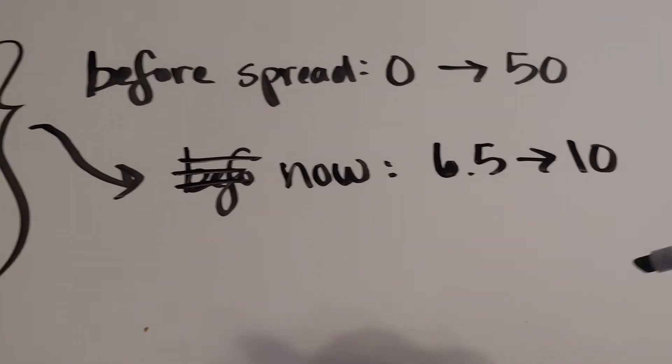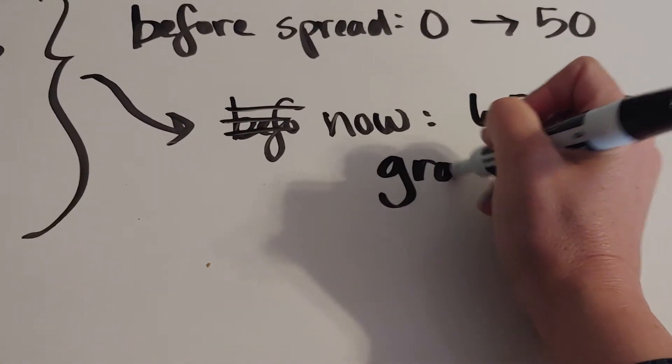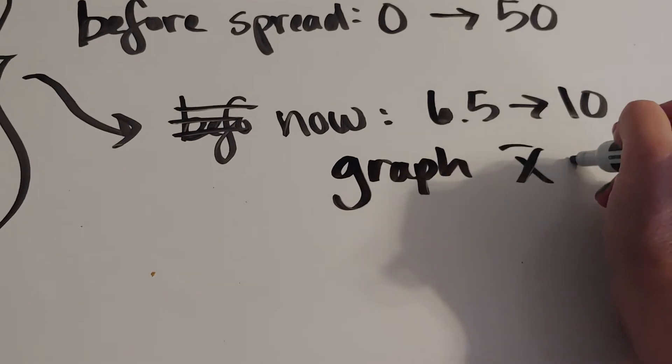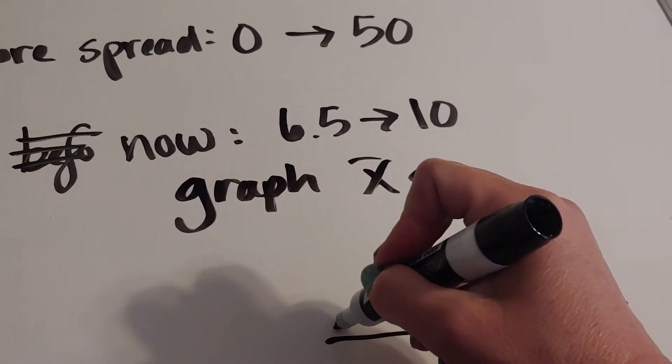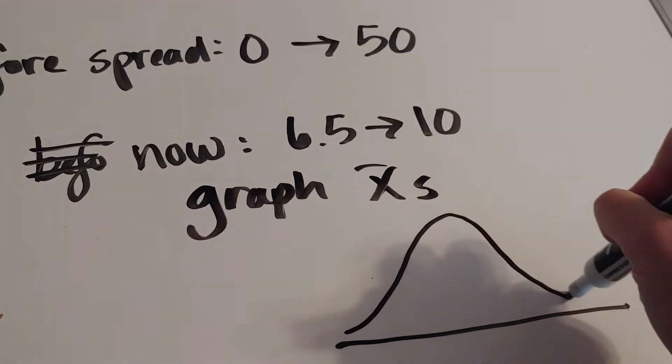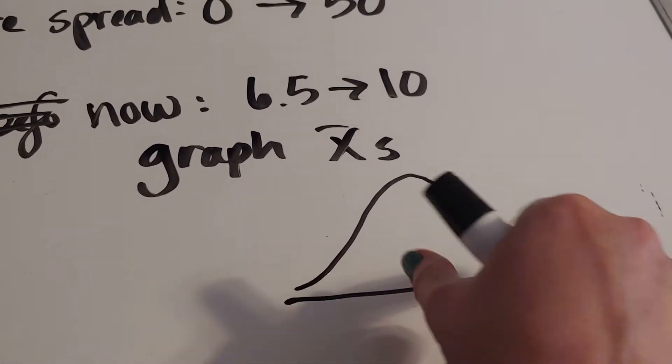Alright, what's going to happen is that we are just going to graph the X̄s. So what will happen when I graph the X̄s is it's going to tighten way up. No longer are we going to have the wacky spread. It's going to be much, much narrower.